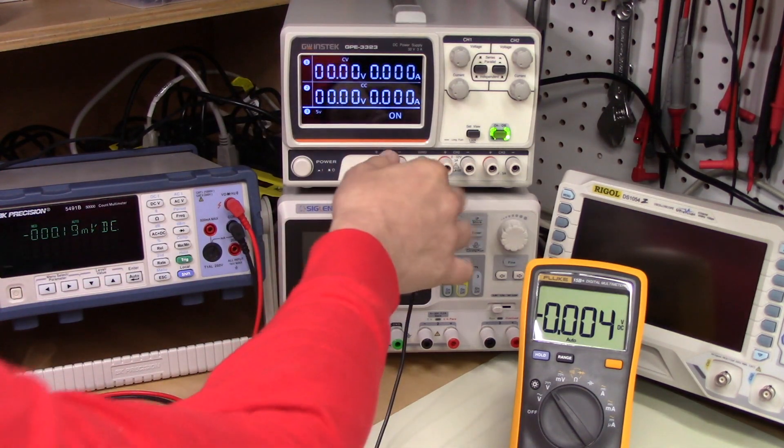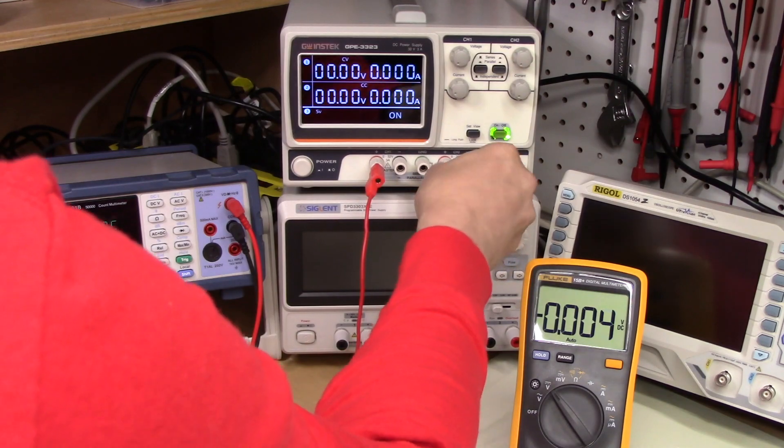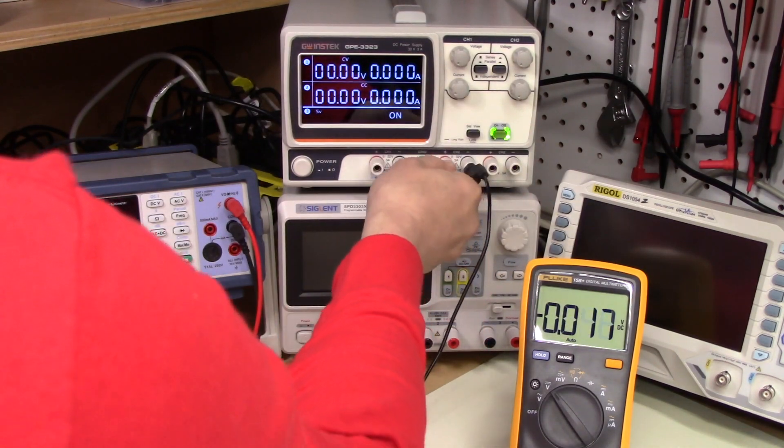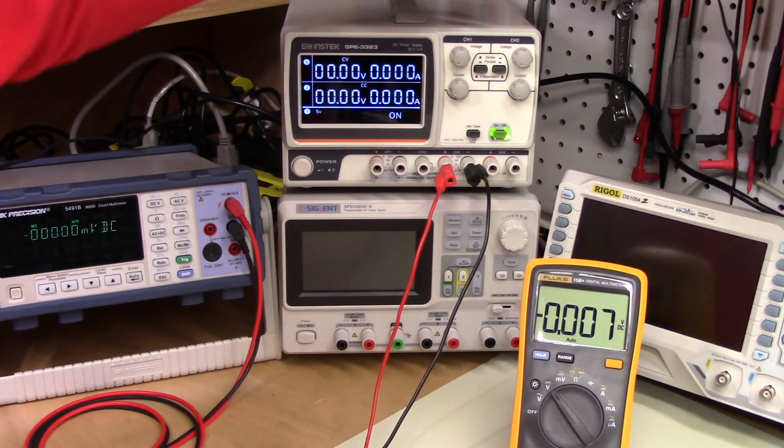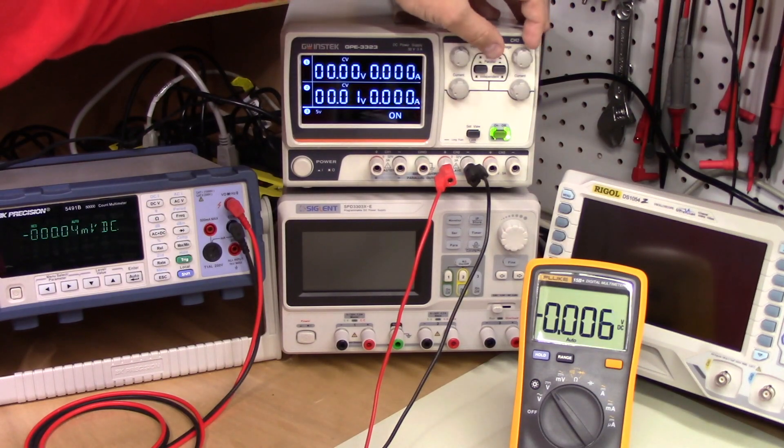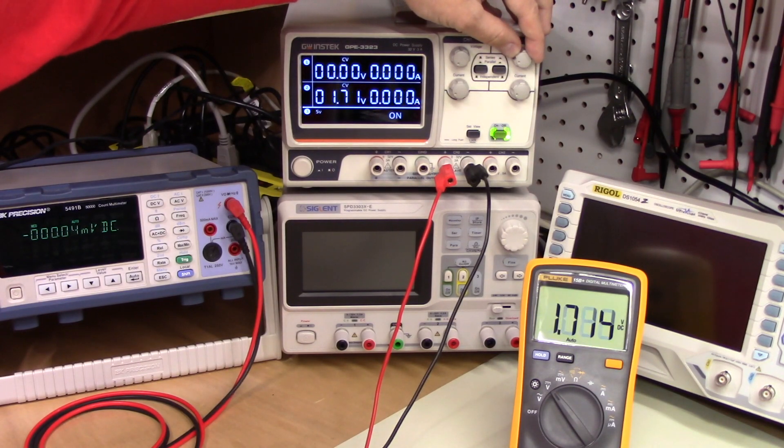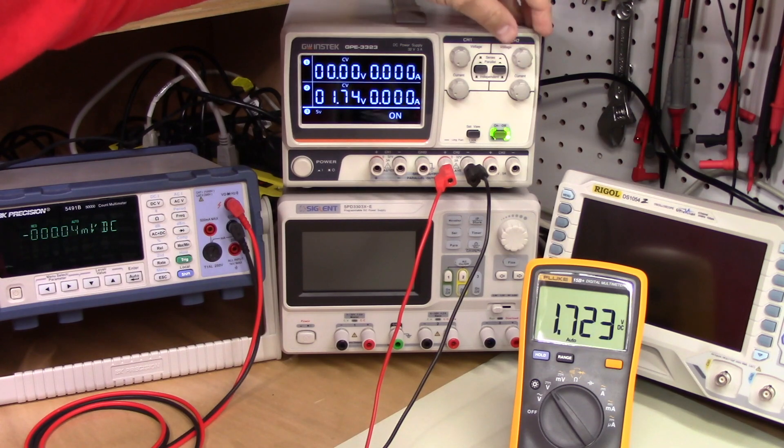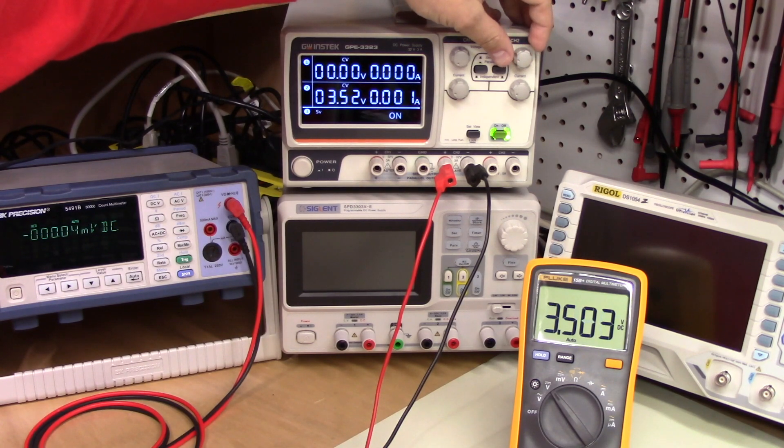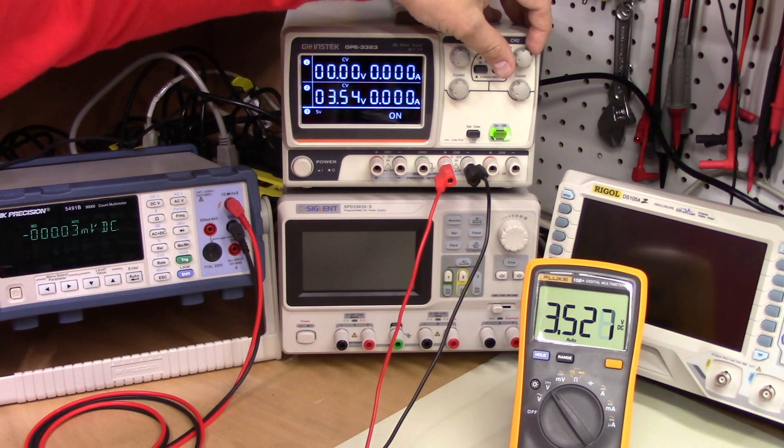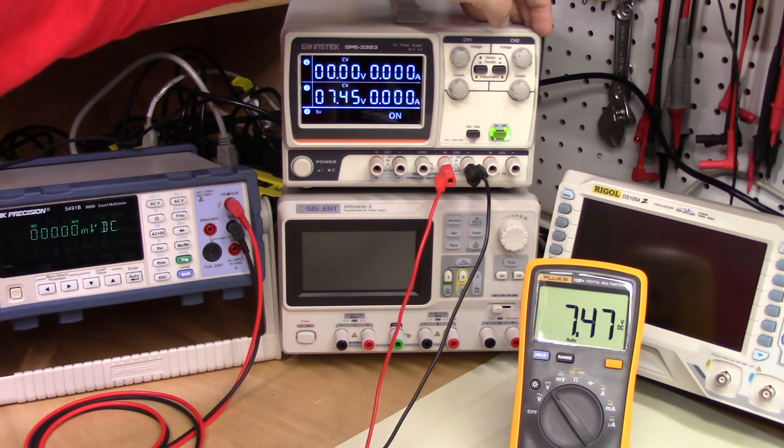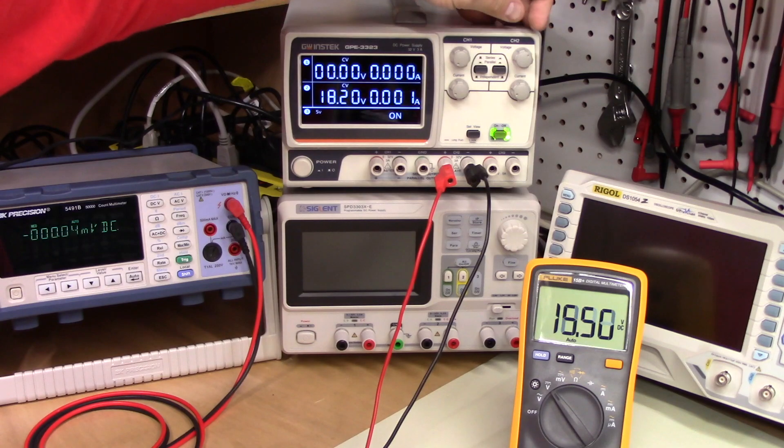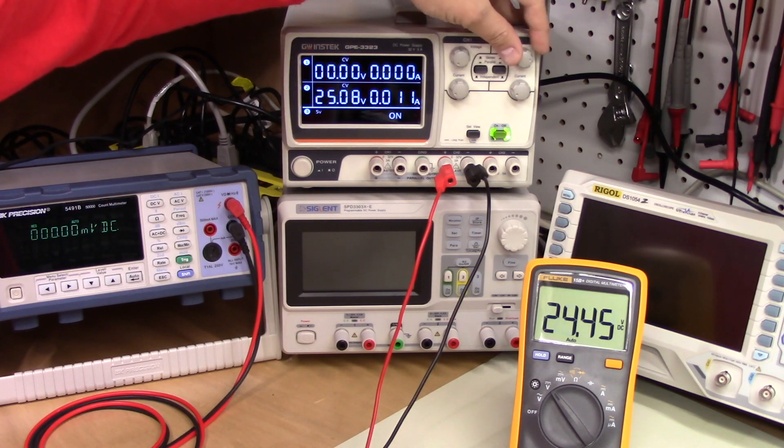Okay, so we have channel 1. Now let's look at channel 2. I'm sure that it will be similarly accurate. Let's give it a little bit of current and start dialing it up there. So nice agreement. Again, good agreement. Again, good agreement. And so on. As we go up and down the range. That's all fine.